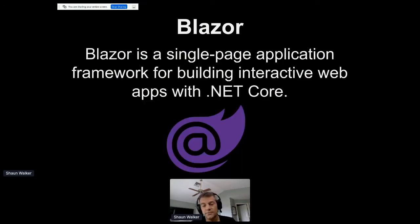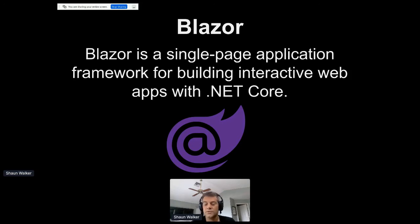Luckily Microsoft did come out with something in 2018 called Blazor. Blazor is basically a single page application framework that lets you build SPA applications using C-sharp, based on .NET Core. So you can use C-sharp on the front end and on the back end, emulating a lot of the characteristics you've become familiar with in Web Forms technology.